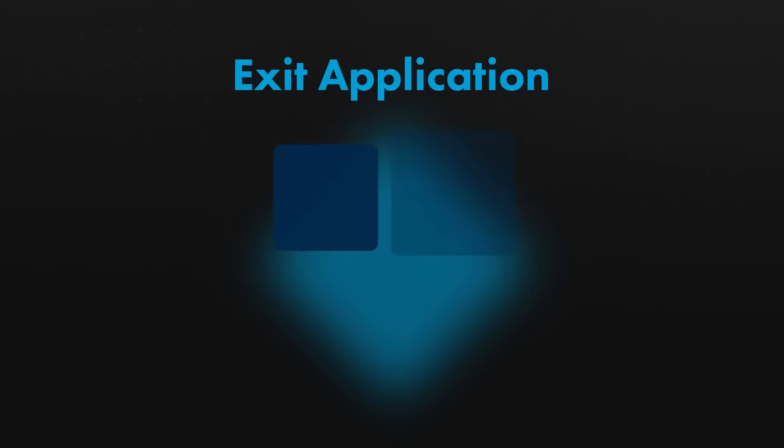How you exit an application is going to relate to how you migrated that application — how you got it into the cloud and what it looks like on the public cloud provider today. For example, if you've simply re-hosted the application — moved it from your on-premises environment onto the public cloud — it will typically take the form of virtual machines, containers, and data. The level of effort for moving that out of a particular cloud provider is relatively easy and straightforward.